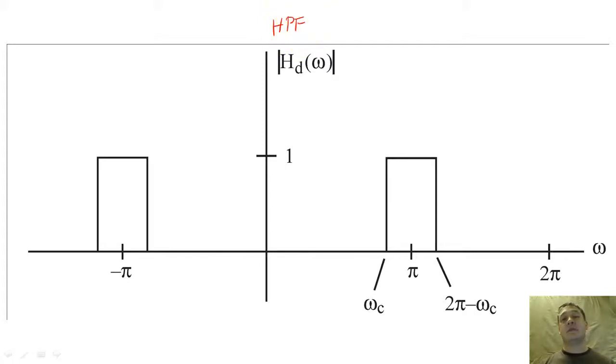The second type of filter is the high-pass filter. This filter does the opposite and removes all frequency content that is less than the critical frequency and passes all frequency content higher than the critical frequency.